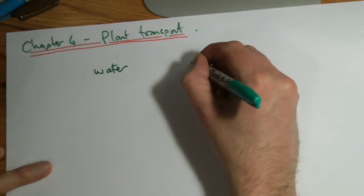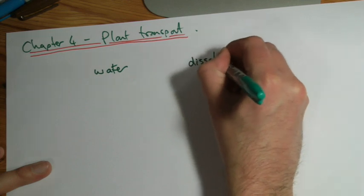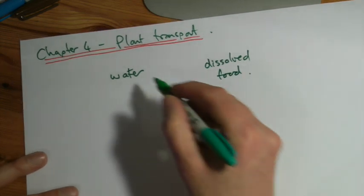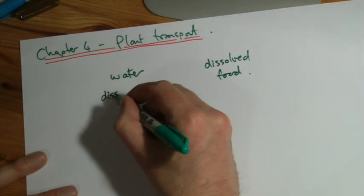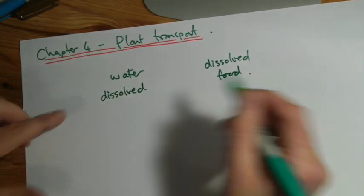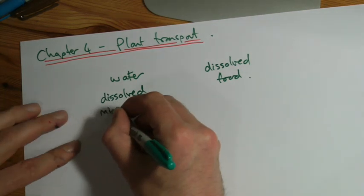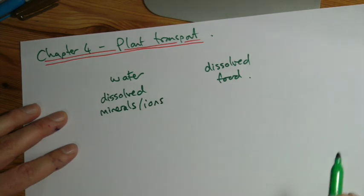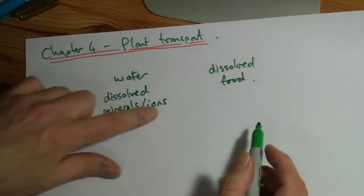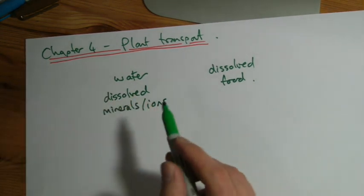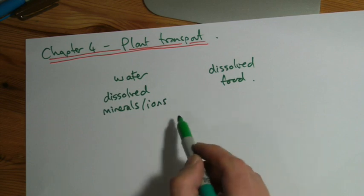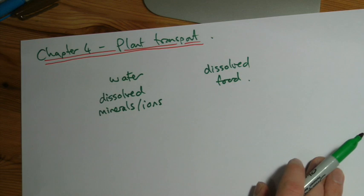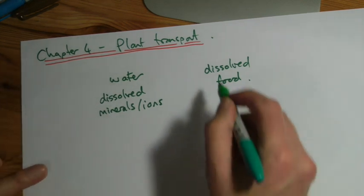But water would be one, dissolved food, that's mainly going to be sugars, and dissolved minerals or ions. Either one of those is a useful term. Try and avoid the term nutrients, it's a bit too vague really.